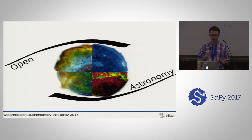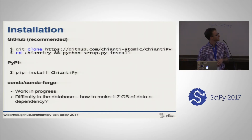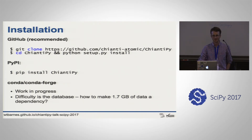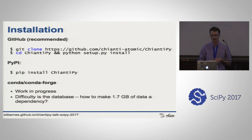We're also part of the Open Astronomy collaboration, which involves SunPy, AstroPy, and YT folks - mainly a collaboration for things like Google Summer of Code and Python and Astronomy workshops. You can find more at openastronomy.org. For installation, I'd recommend just going to GitHub, cloning it, and running Python setup.py install. It is on PyPI but I'm not sure when that version was last updated. We'd like to release on Conda Forge but currently I'm not sure how to make the database a dependency there.